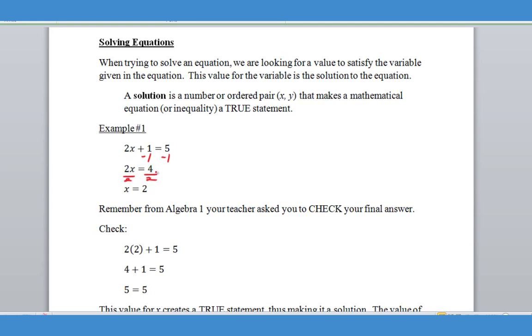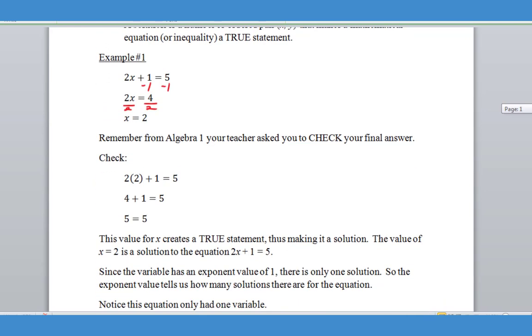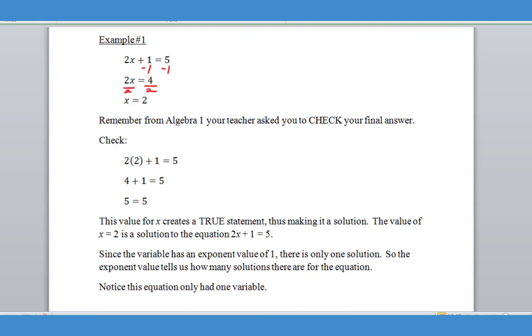And so we've now found a value for X, and so we would call X a solution to this equation. Now, if you remember your Algebra 1 teachers should have emphasized the point of checking your answers. And so you can see the check process here where we take the 2 value for X and we plug it back into the original equation. And you can see very simply that it creates a statement that says 5 equals 5. And since we know this to be a true statement, this verifies that X is a solution for the equation 2X plus 1.